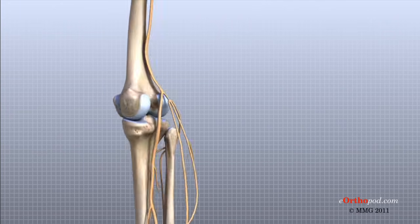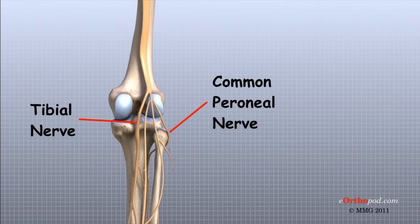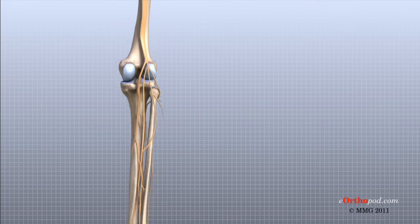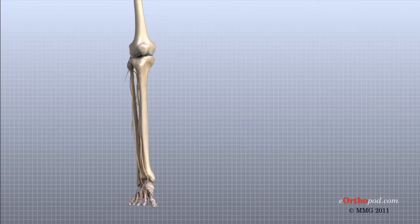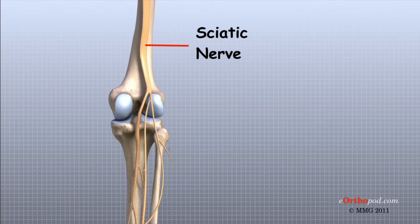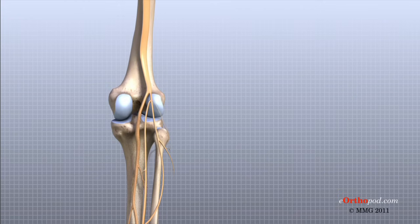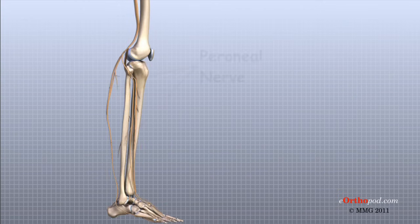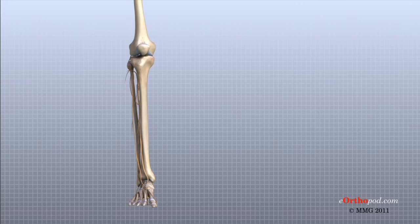The most important nerves around the knee are the tibial nerve and the common peroneal nerve in the back of the knee. These two nerves travel to the lower leg and foot, supplying sensation and muscle control. The large sciatic nerve splits just above the knee to form the tibial nerve and the common peroneal nerve. The tibial nerve continues down the back of the leg, while the common peroneal nerve travels around the outside of the knee and down the front of the leg to the foot. Both of these nerves can be damaged by injuries around the knee.